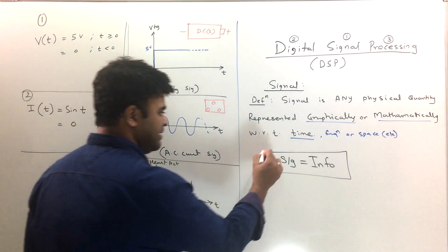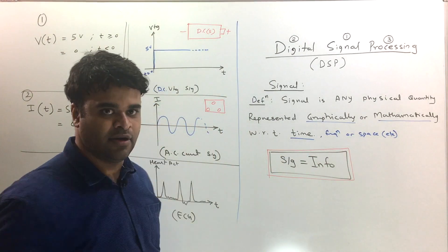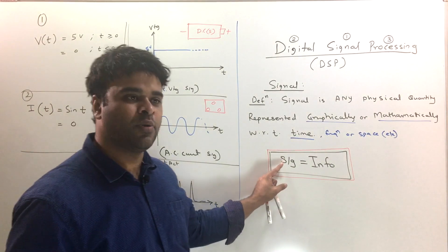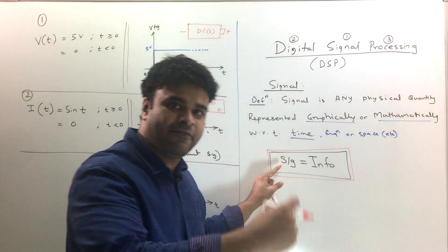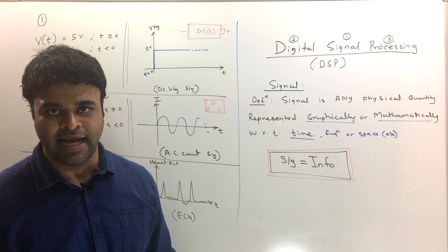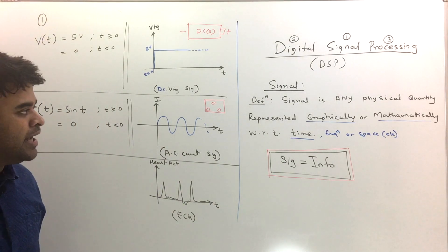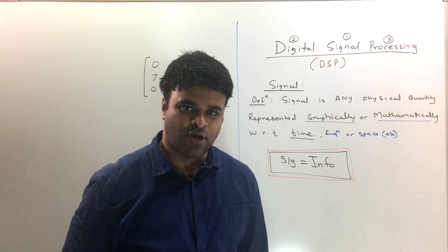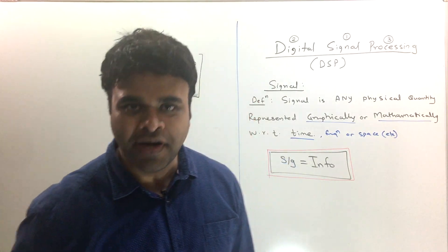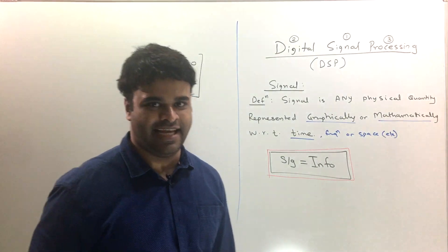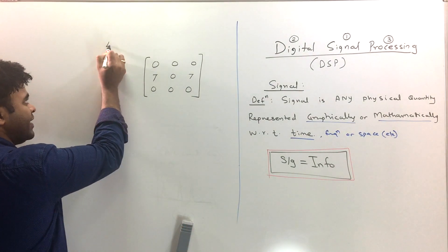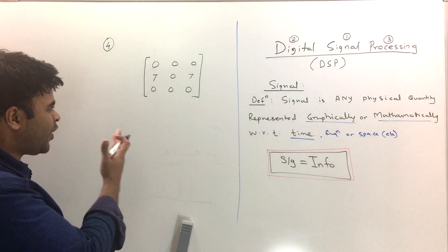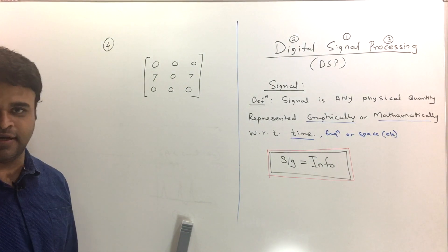This is a very important point: every time you hear the word 'signal,' it can be a graph or a mathematical expression, but the key thing to remember is that a signal is information, and every information can become a signal. Before moving to the next topic, I want to give you one more example — a fourth example — and this one is really key.